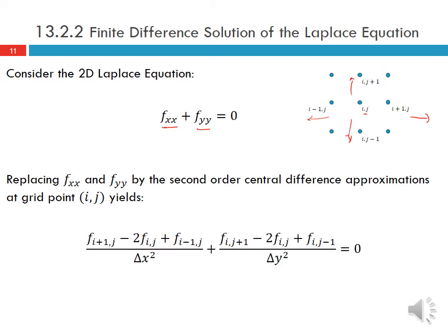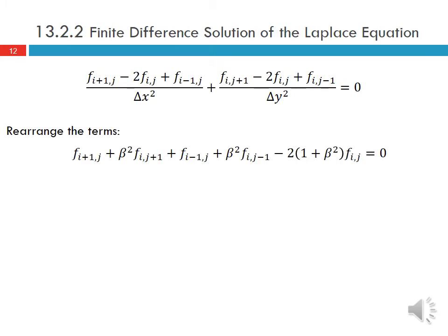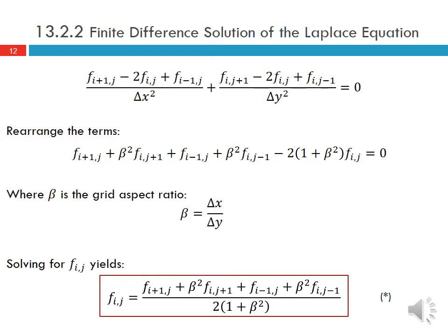Substituting the central difference approximations yields the finite difference equation. For the x terms we keep j and change the i subscripts, and for the y terms we keep i and change the j subscripts. We can rearrange the terms where beta is the grid aspect ratio, delta x over delta y. Solving for f at grid point (i,j) gives the expression — let's call this equation star.